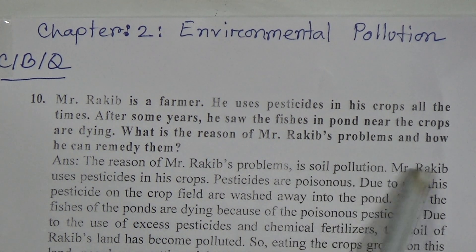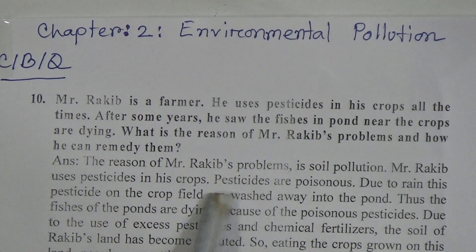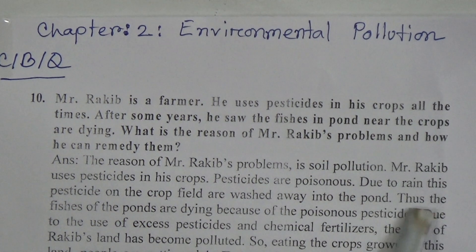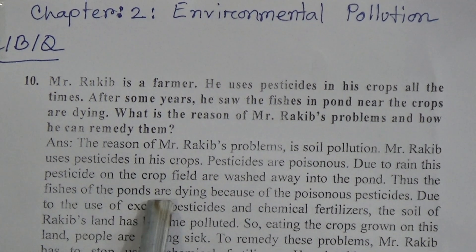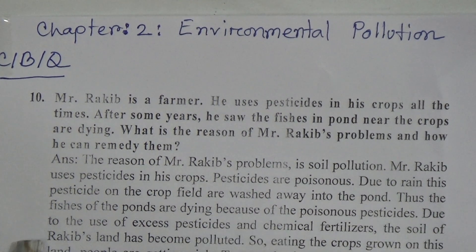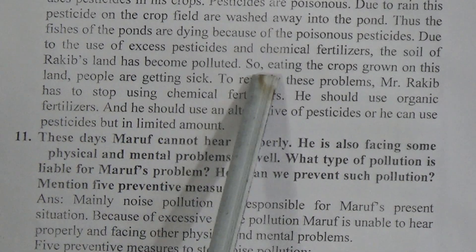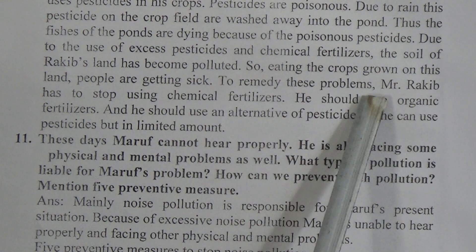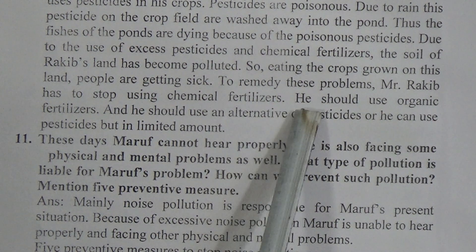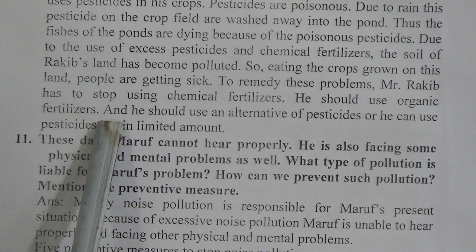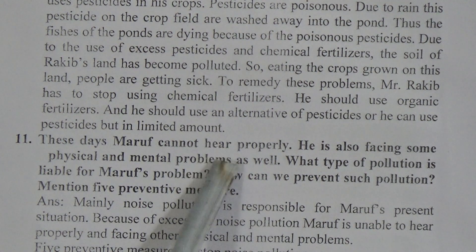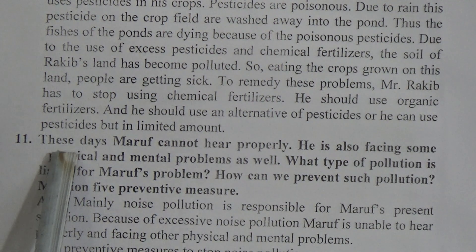Mr. Rakib uses pesticides in his crops. Pesticides are poisonous. Due to rain, these pesticides on the crop field are washed away into the pond, and thus the fishes of the pond are dying because of poisonous pesticides. Due to the use of excess pesticides and chemical fertilizer, the soil of Rakib's land has become polluted, so people eating the crops grown on this land are getting sick. To remedy these problems, Mr. Rakib has to stop using chemical fertilizer, use organic fertilizer, and use an alternative to pesticides or use pesticides in limited amounts.